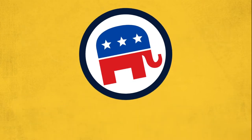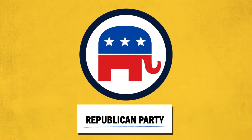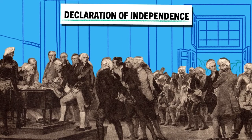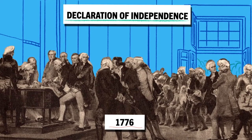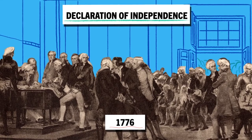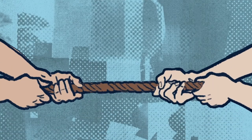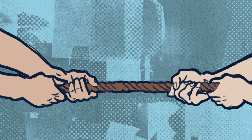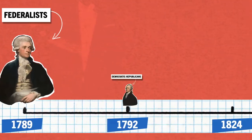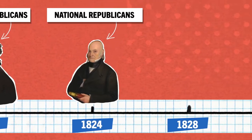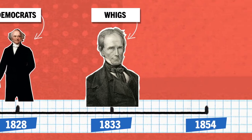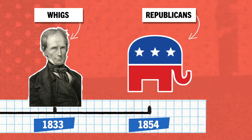Today we are going to take a look at the history of the Republican Party. When the United States declared independence from British rule in 1776, its first job was to set up a government. This was not easy, and people had different ideas about how the country should be run. These differences led to the formation of political parties. But the modern Republican Party was not one of them — that didn't happen until 1854.